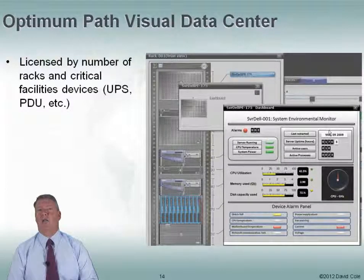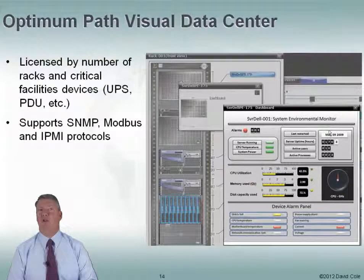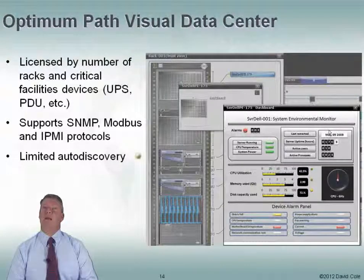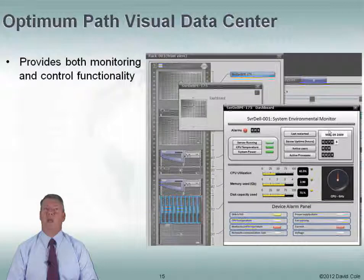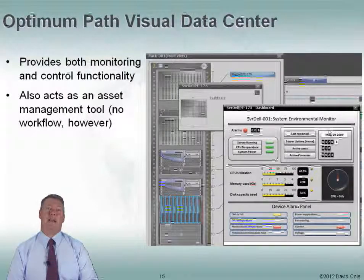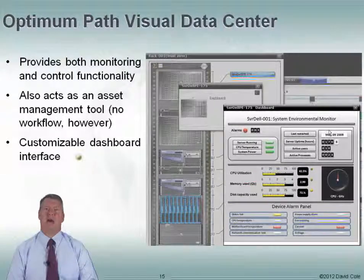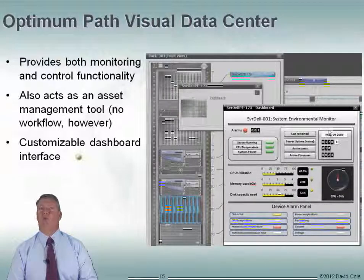Optimum Path Visual Data Center is a nice product. It supports some limited auto discovery. It is licensed by the number of racks and the number of critical facilities devices — UPSs, PDUs, and so on. It supports multiple protocols: SNMP, Modbus, and IPMI. With limited auto discovery, some devices can be discovered automatically, making setup easier. They provide both monitoring and control functionality. It also features a 3D model — you can do a fly-through of the data center. It can also act as an asset management tool, though it doesn't provide workflow. They have a customizable dashboard interface, and a lot of the customization can be done yourself with the tools they provide.